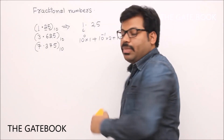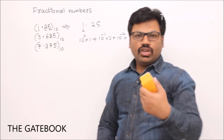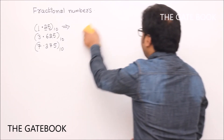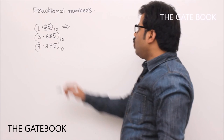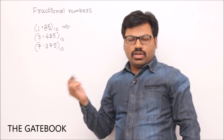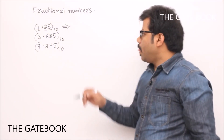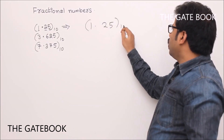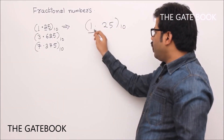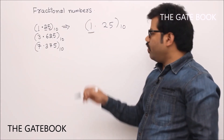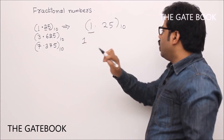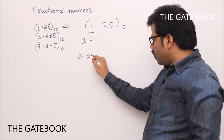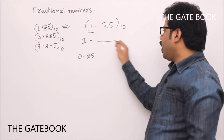This rule will be applicable for binary also. When you have a binary number, during conversion you can use this formula — remember it. Now we will come to the conversion part: how to convert a fractional number which is in decimal to binary. Take 1.25 base 10. First of all, we see how to convert 1 into binary. We know that directly it is 1. Done. Keep the point as it is.